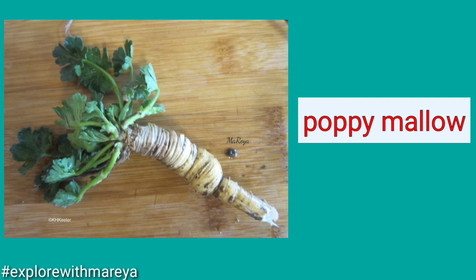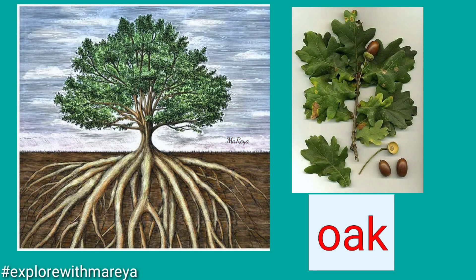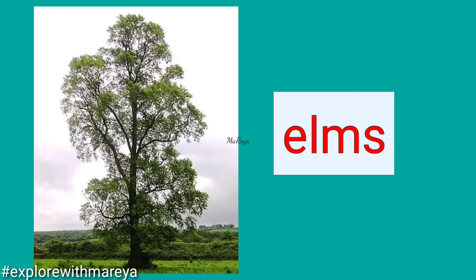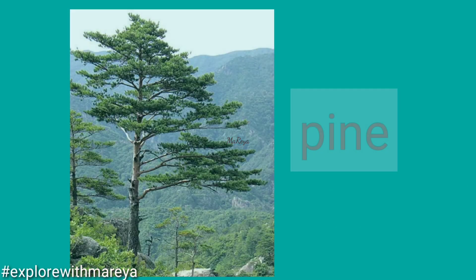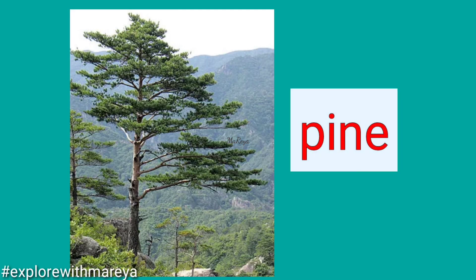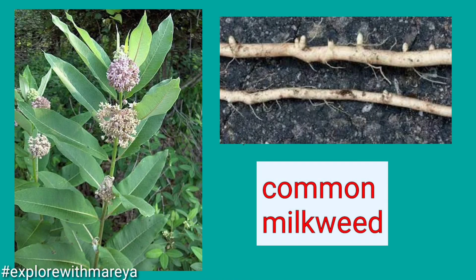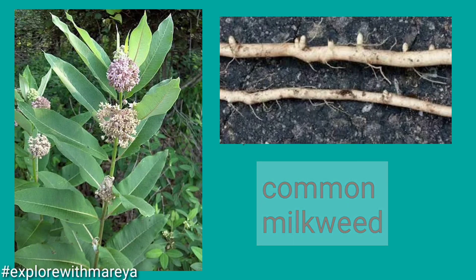Poppy mallow — poppy mallow has a taproot. As well as the oak tree; oak tree has a taproot. And also the elms — it has a taproot also. And pine trees, as well as common knapweed — it has a taproot.